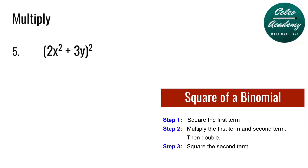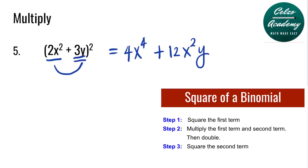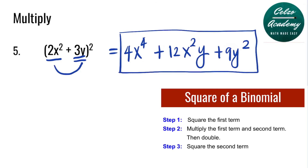Question 5: 2x squared plus 3y, to the second power. Step 1: Square the first term — 2x squared times 2x squared is 4x to the fourth, because you add the powers 2 and 2. Step 2: Multiply the first and second, and then double. 2x squared times 3y is 6x squared y; doubling that gives 12x squared y. Step 3: Square the second term, 3y — 3y times 3y is 9y squared. So the answer for number 5 is 4x to the fourth plus 12x squared y plus 9y squared.